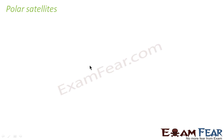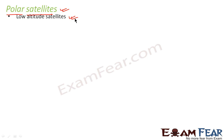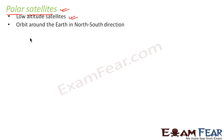Now we will see another class of satellites — that is polar satellites. What are polar satellites? They are low altitude satellites, meaning these satellites revolve or orbit around the earth at lower heights. They orbit around the earth in the north-to-south direction.